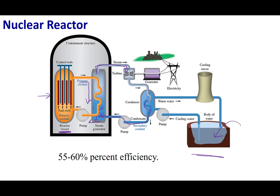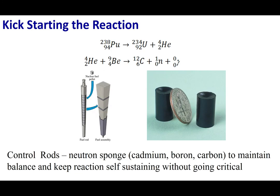This process is about 55% to 60% efficient. Nuclear fuel pellets are about the size of a dime; they're placed into cylinders and bundled into fuel assemblies. In between the fuel assemblies are control rods, which control the neutron flux so the nuclear reaction never becomes supercritical — because supercritical means the reaction goes out of control and releases far too much energy.